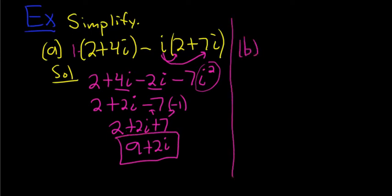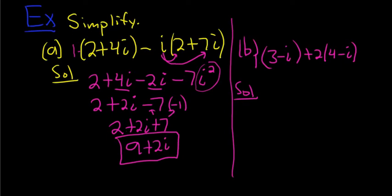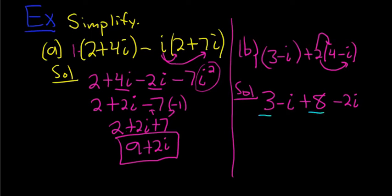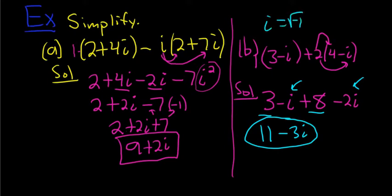Next example: (3 minus i) plus 2 times (4 minus i). There's a 1 here, so we drop the parentheses and get 3 minus i, then distribute the 2: 2 times 4 is 8, and 2 times negative i is negative 2i. Combining like terms: 3 plus 8 gives 11, and negative i minus 2i gives negative 3i. So the answer is 11 minus 3i. You treat i almost like a variable — you just combine the like terms.